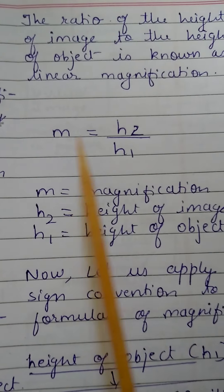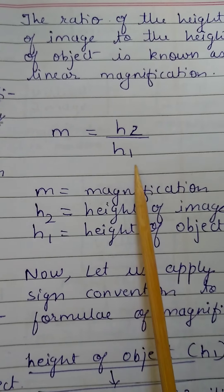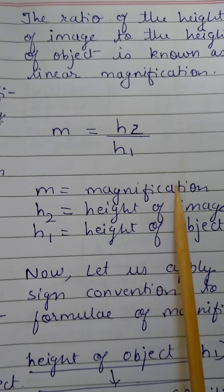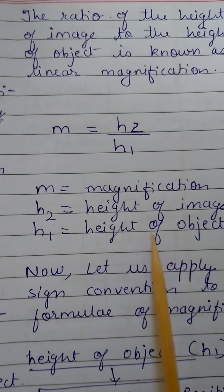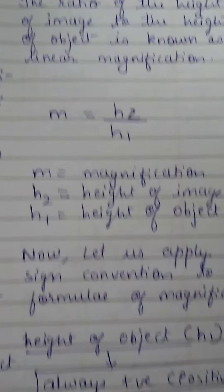So M is equal to H2 upon H1, where M is magnification, H2 is height of image, and H1 is height of object.